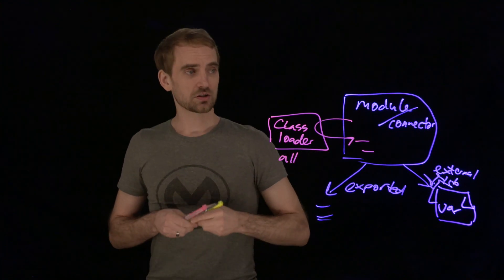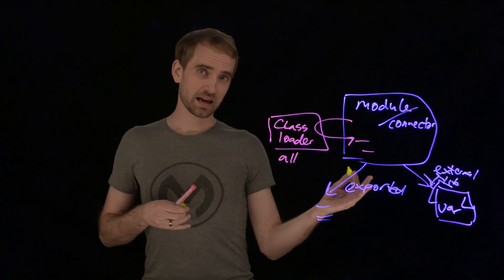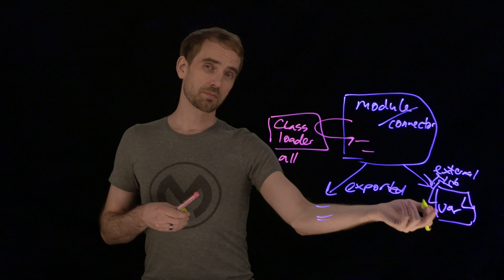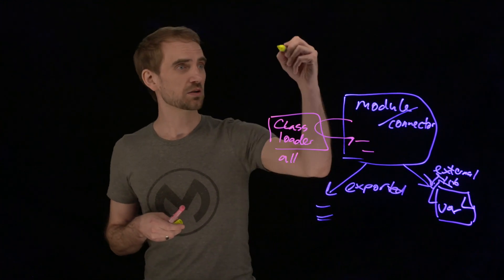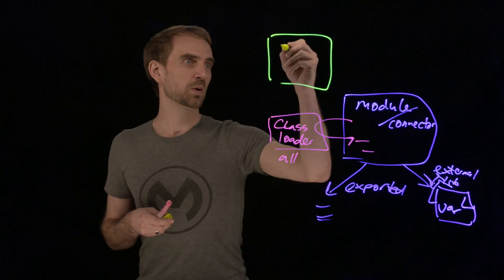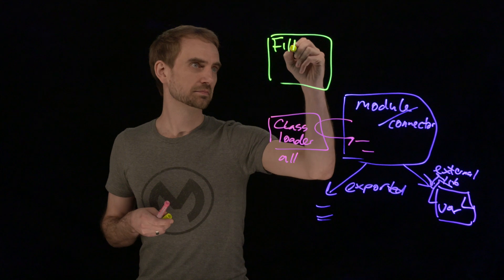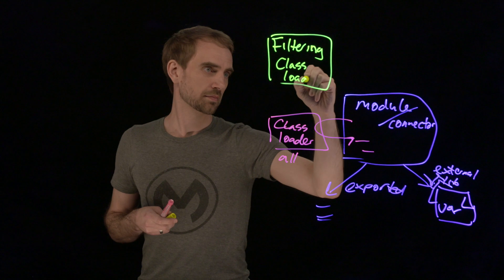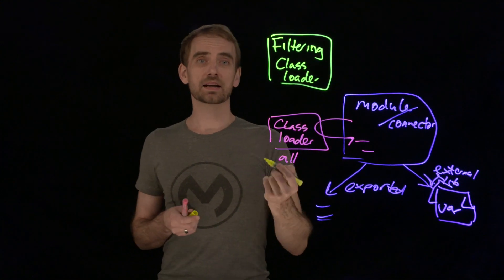As far as your application is concerned, the application doesn't want to see all of that and nor does it want to have you picking the version of a library that you're going to see. So there is another class loader and this one is a filtering one, and this one's used by the application.